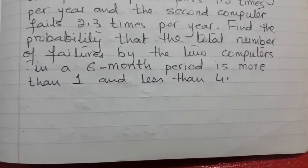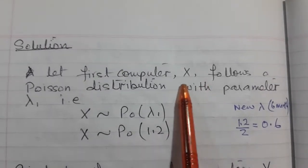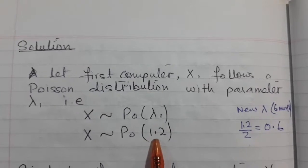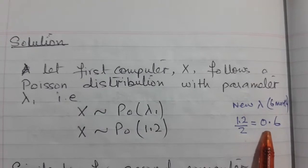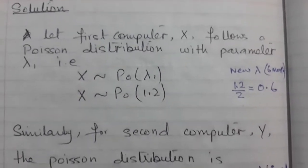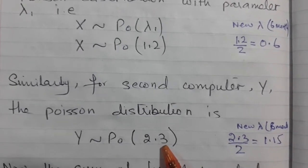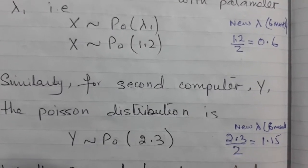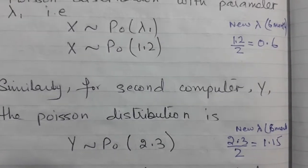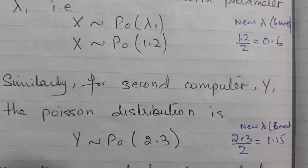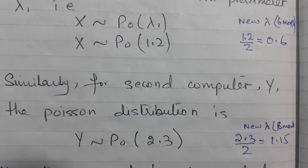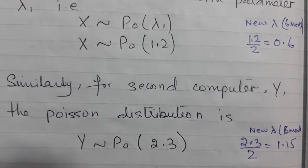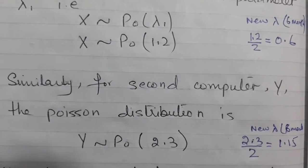For the first computer, random variable X, it fails on average 1.2 times per year. To find the new lambda for six months, divide by 2, giving 0.6. For the second variable Y, it fails 2.3 times per year, so the new lambda for six months is 2.3 divided by 2, which is 1.15. Since the question asks for the total, I add these two values: 0.6 plus 1.15 equals 1.75, and this will be my new lambda for the total number of failures within six months.